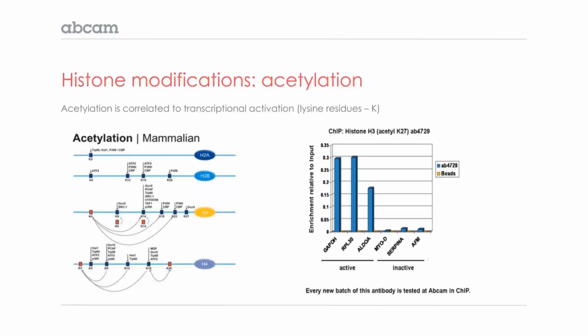I'd like to focus a bit more on acetylation and methylation, as these modifications are most commonly studied by ChIP. Acetylation occurs on lysine residues, and there are specific enzymes that add or remove acetyl groups to lysines, histone acetyltransferases and histone deacetylases, respectively. On the right, you can see a representative ChIP experiment using an H3K27 acetyl antibody. This antibody specifically recognizes histone H3 when it's acetylated at lysine 27.